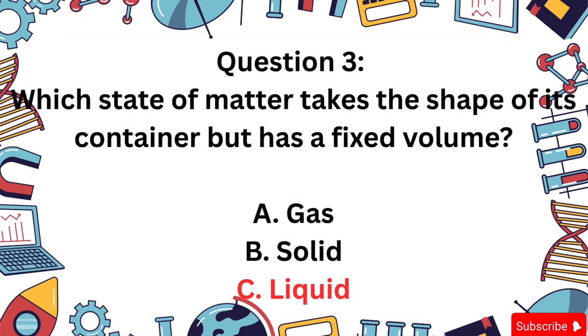Question 3: Which state of matter takes the shape of its container but has a fixed volume? Is it A) Gas, B) Solid, or C) Liquid? The correct answer is C. Liquids take the shape of their container but do not expand to fill it. That's why water stays the same amount no matter the shape of the glass.